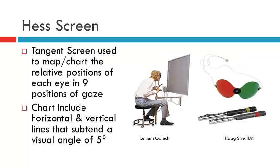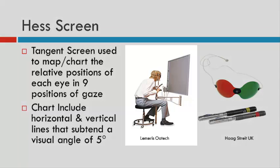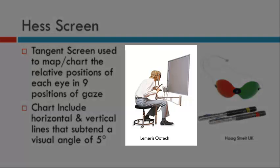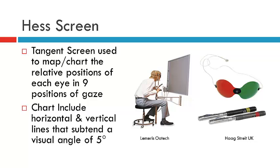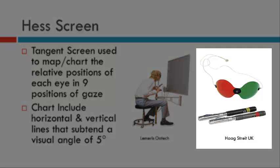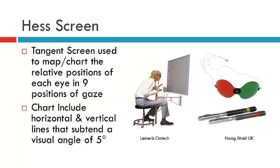The HES screen consists of a tangent screen, which is used to map the relative positions of the eyes in nine positions. Here we have a patient sitting in front of a tangent screen. The chart includes horizontal and vertical lines that subtend a visual angle of five degrees. In order for the patient to perform this test, they need to be wearing red-green goggles, and we need red-green torches — one held by the patient and one by the examiner.